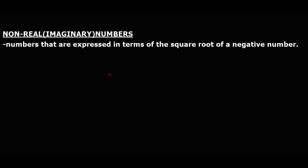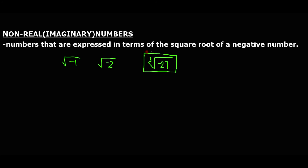Non-real numbers, also called imaginary numbers, are numbers where you take the square root of a negative number — for example, the square root of negative one or the square root of negative two. Be careful: a cube root of a negative number is not imaginary. Imaginary numbers specifically involve taking the square root of a negative number. That's it for this tutorial.